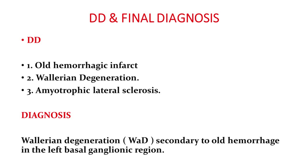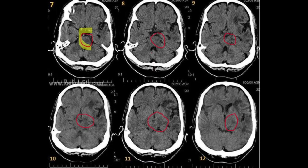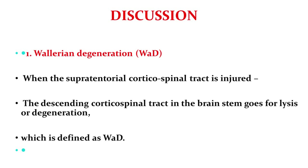The final diagnosis is Wallerian degeneration in the background of gliotic changes in the left basal ganglia. I'm going to discuss the central type of Wallerian degeneration, which is due to cerebral injury. Wallerian degeneration is a process of progressive demyelination and disintegration of the distal axonal segment following axonal transection.